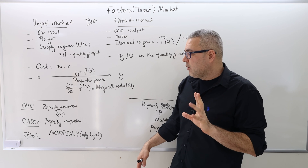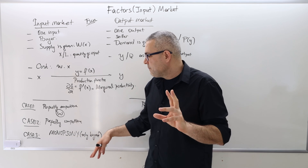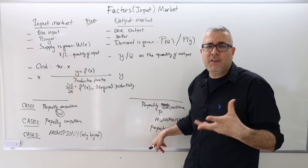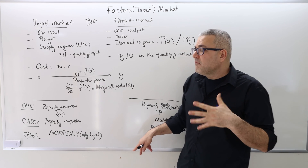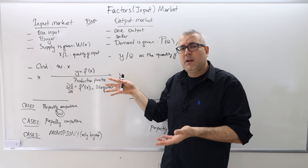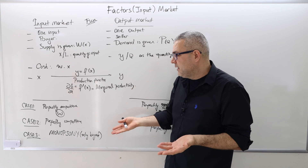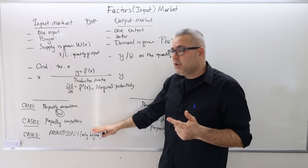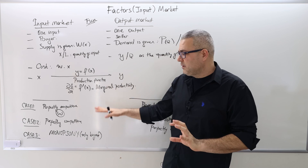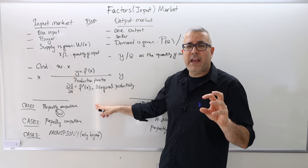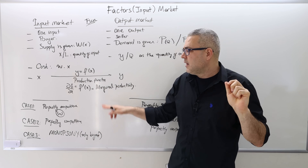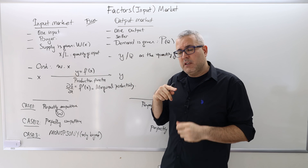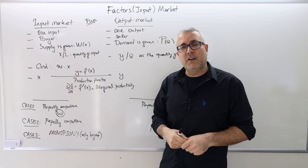There is also a possible case four — the firm is both monopsonist in the input market and monopolist in the output market. I may give the optimization problem for this, but we won't solve it since it's not covered by our textbook. Cases two and three are the core of this chapter. Case one is important as the benchmark result. In the next videos, I will cover those three cases.